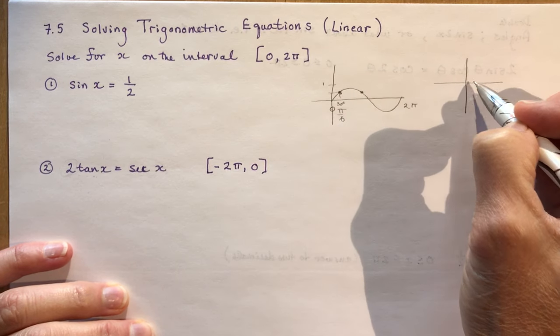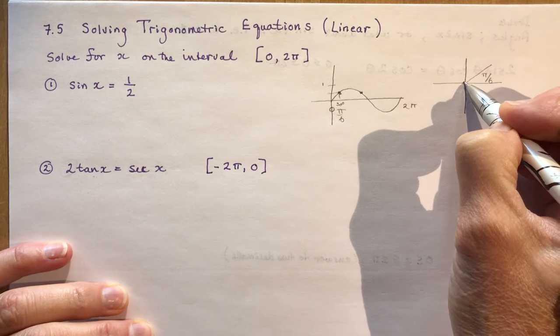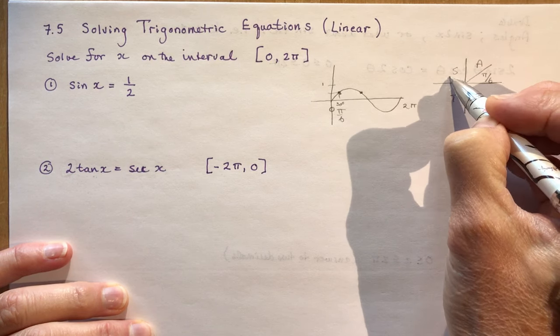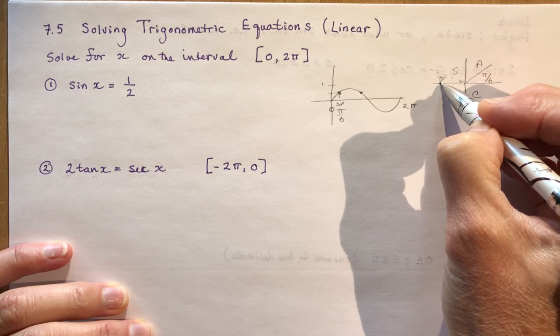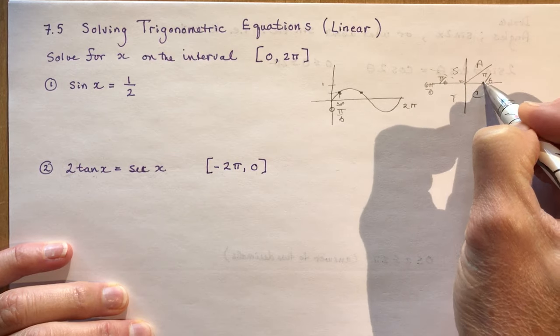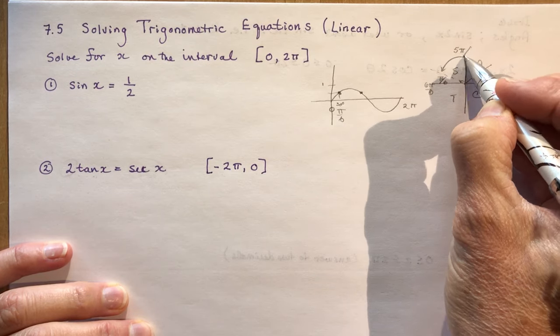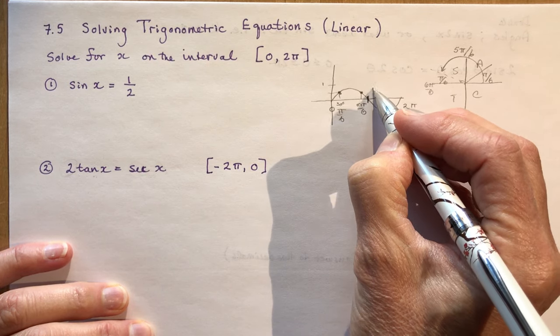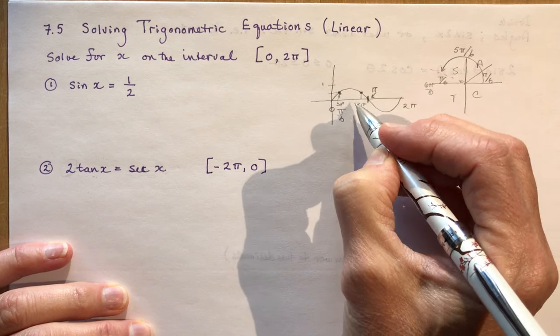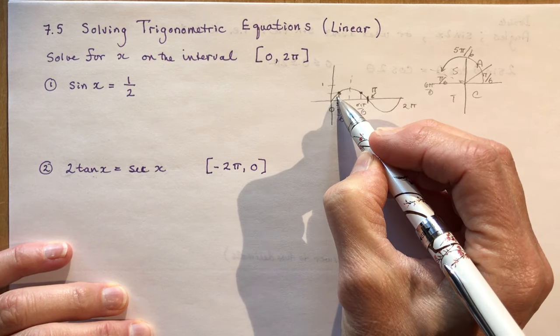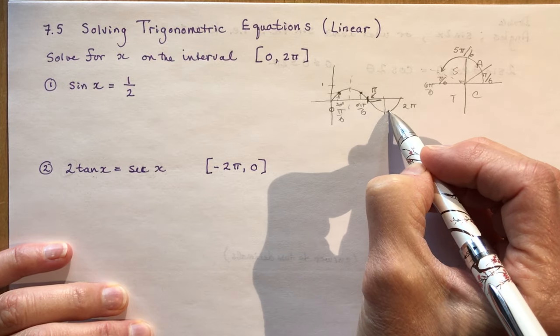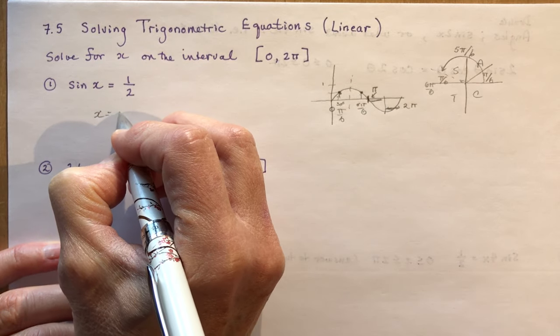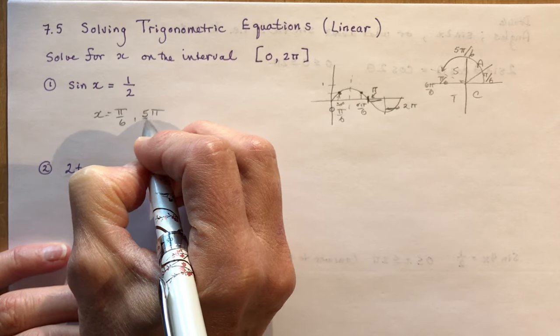So we have one solution here, π over 6. So that's my CAST. And we have another one over here, which would be π over 6 away from 6π over 6 or 5π over 6. So this one here is 5π over 6. That also makes sense because this is π here, right? And so as you can see, this is my first quadrant, the second quadrant, the third quadrant goes from here to here, and the fourth quadrant from here to here. So that means x is going to be equal to π over 6 and 5π over 6.